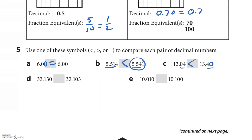Make sure you stop and try the next one on your own. On D, it looks the same all the way until the hundredths — thirty-two and thirteen hundredths vs. thirty-two and ten hundredths. Thirty-two and thirteen hundredths is definitely bigger, so it's the greater-than symbol. For the next one, you just go to the tenths — ten and one tenth is definitely bigger, so I put a less-than symbol.